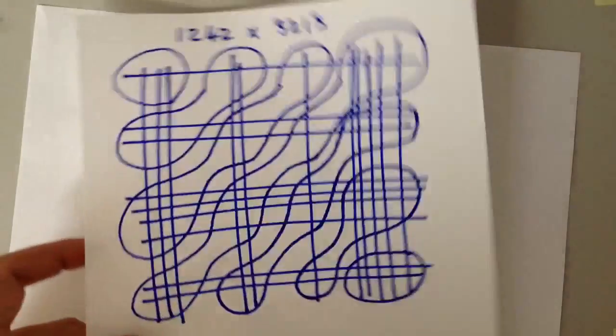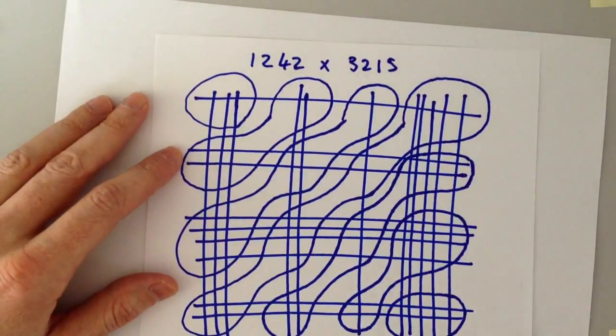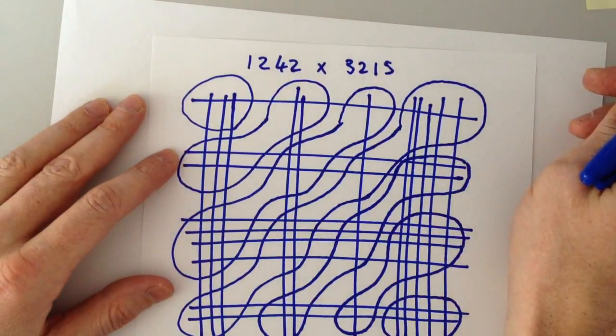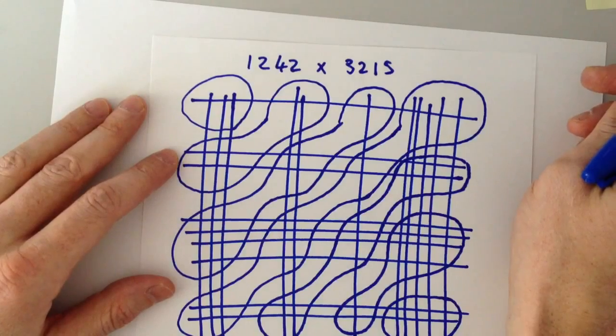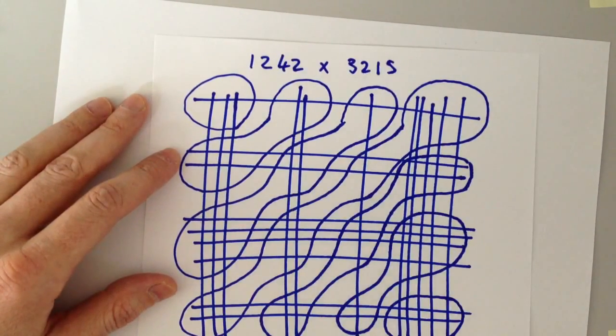This scales up quite well. Here's an example I was doing earlier. We take two very large numbers, 1242 times 3215. As you can see, I've drawn the lines horizontally and vertically, as I explained.